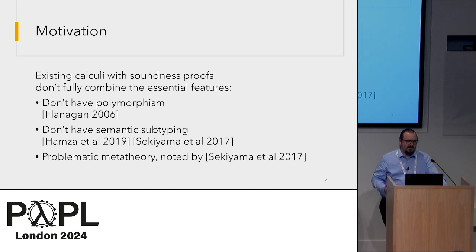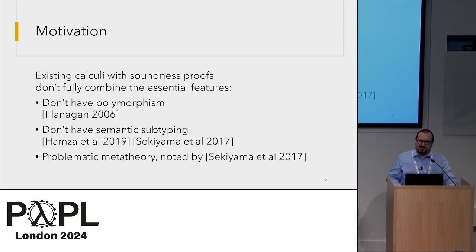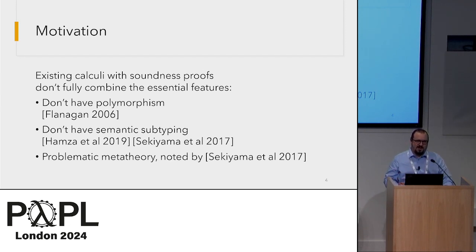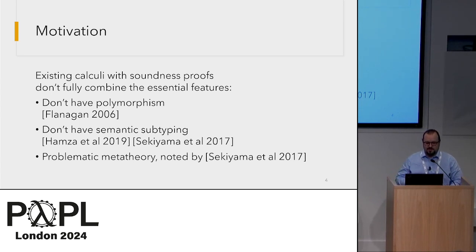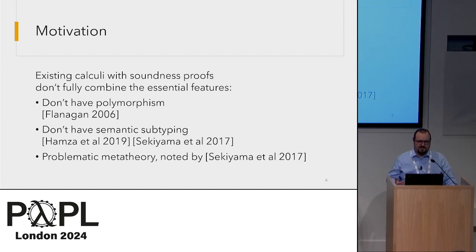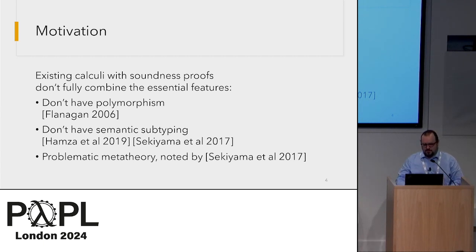Existing calculi with soundness proofs don't fully combine the essential features of practical refinement types. Some systems don't have polymorphism, for instance Flanagan's 2006 system. Others don't have semantic subtyping and have syntactic subtyping casts or other replacements — for example, system FR, Sekiyama 2017. Sekiyama 2017 also noted that some published systems have a problematic metatheory resulting from various workarounds.